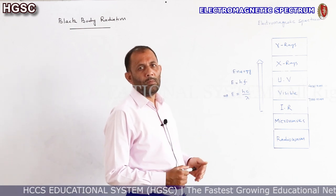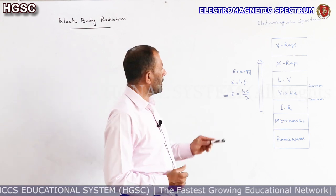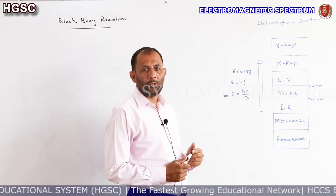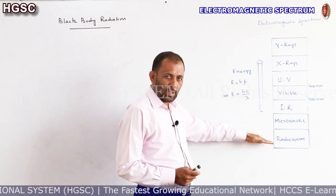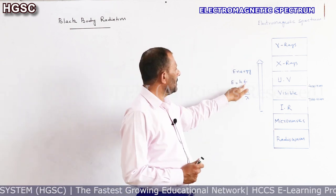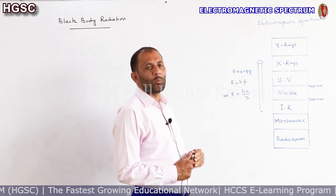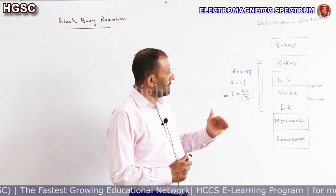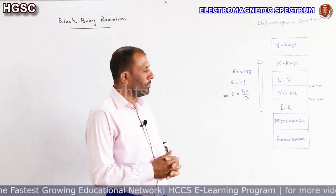Gamma rays have the highest energy and radio waves have the lowest energy. According to quantum theory, energy is written as E = hf, and in terms of wavelength as E = hc/λ. This means that as energy increases from bottom to top, frequency also increases because frequency and energy are directly proportional, but wavelength decreases.